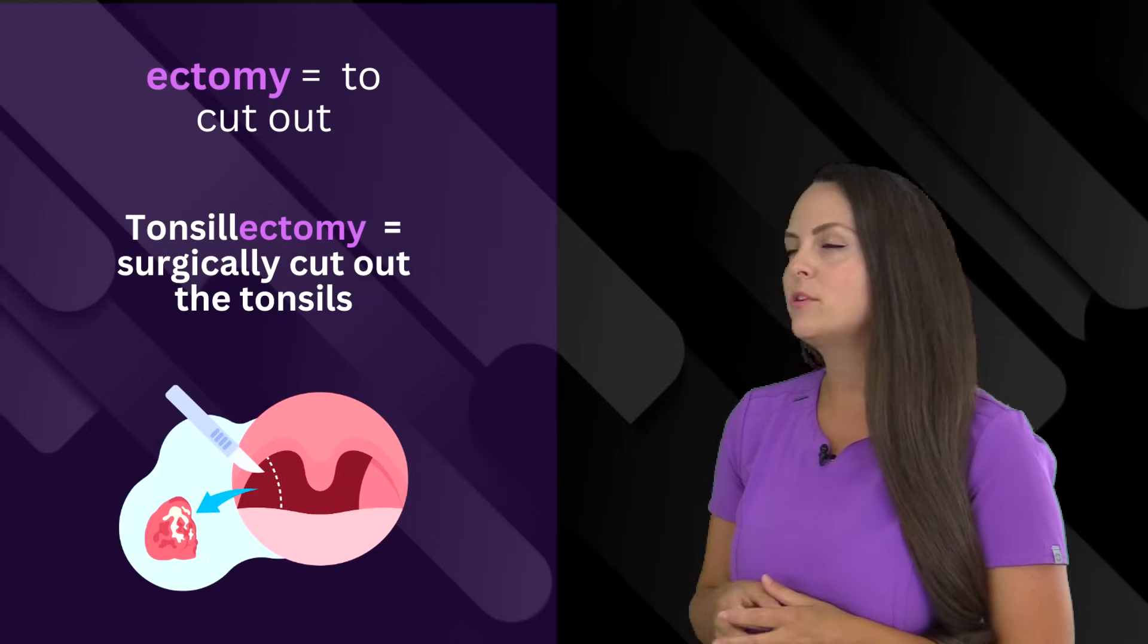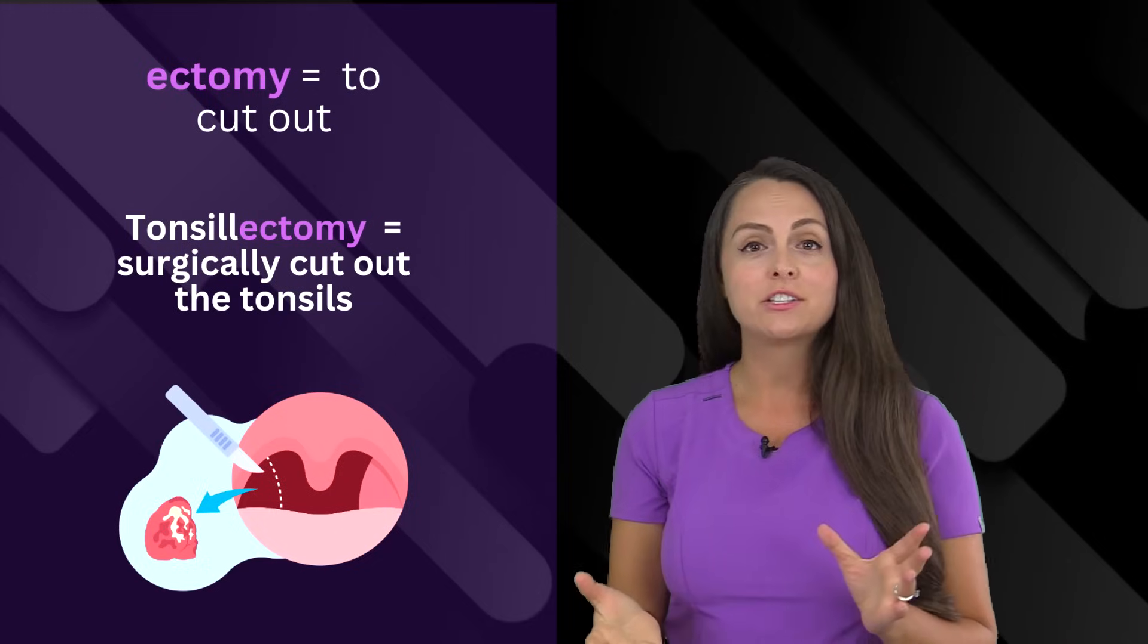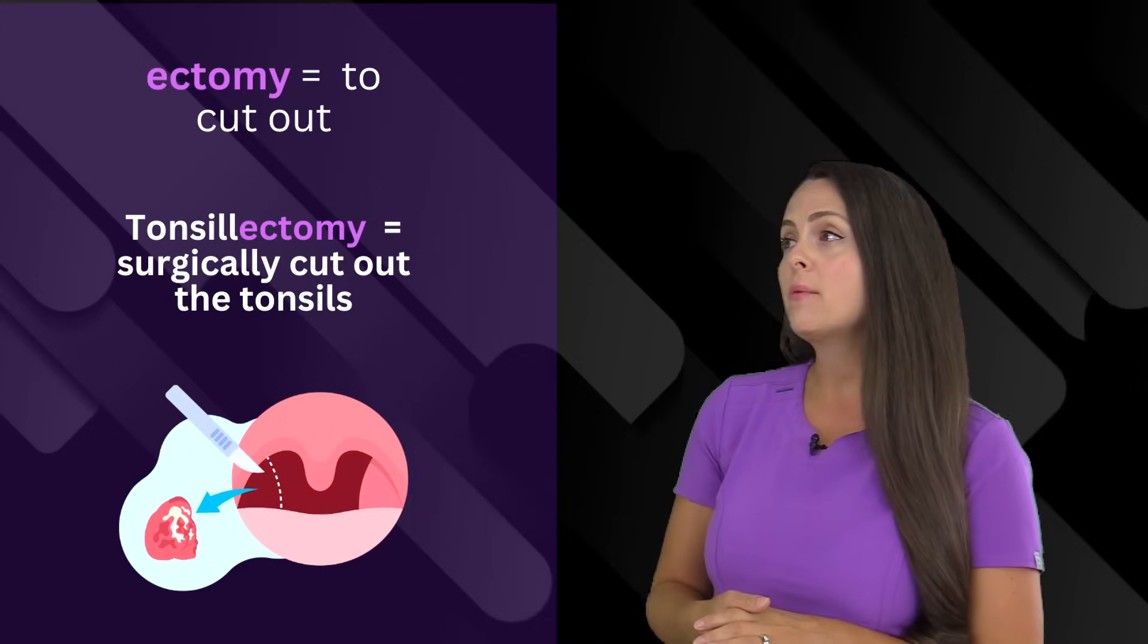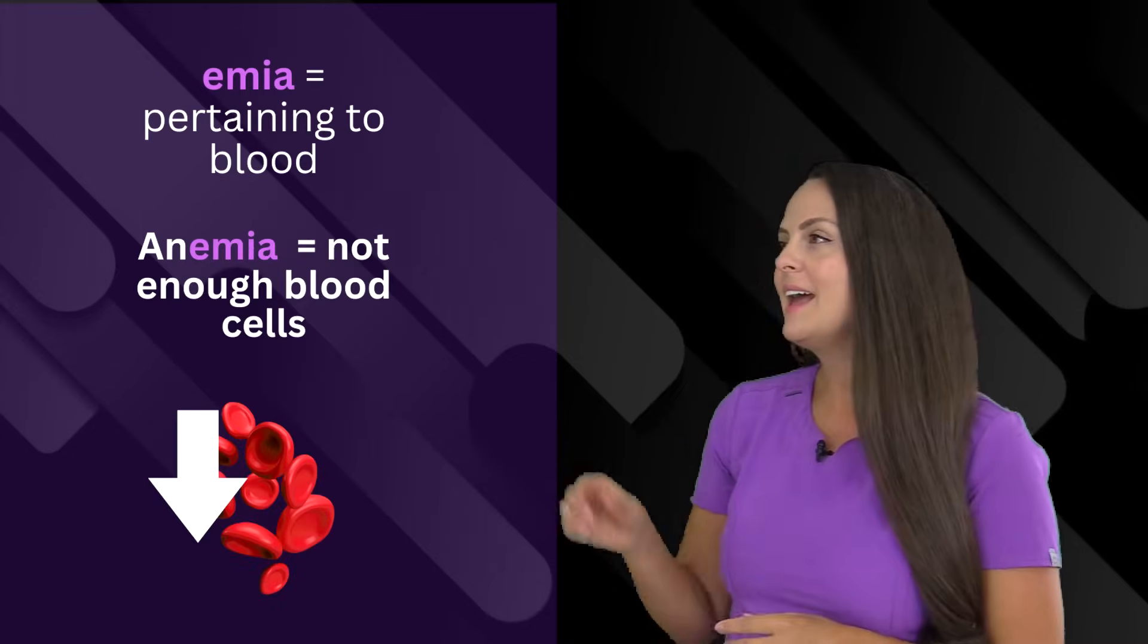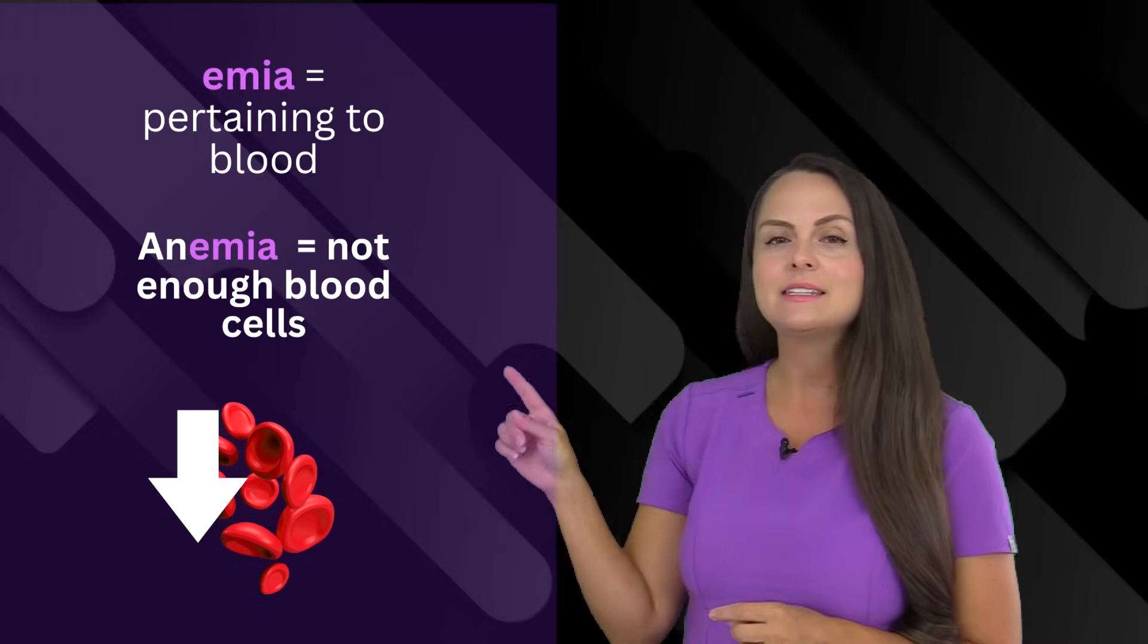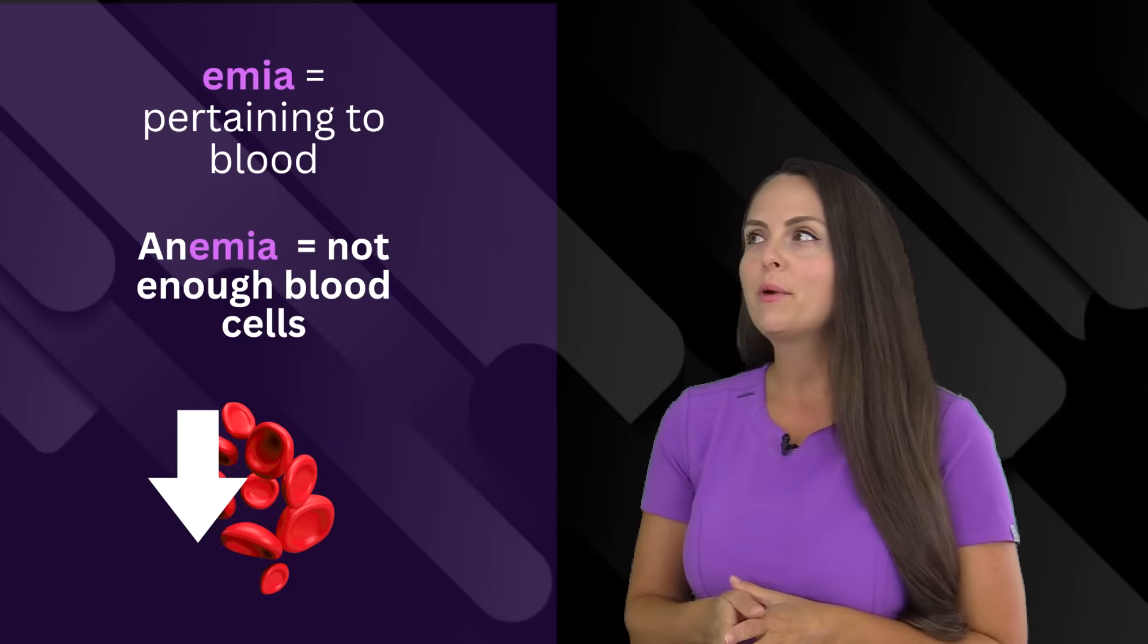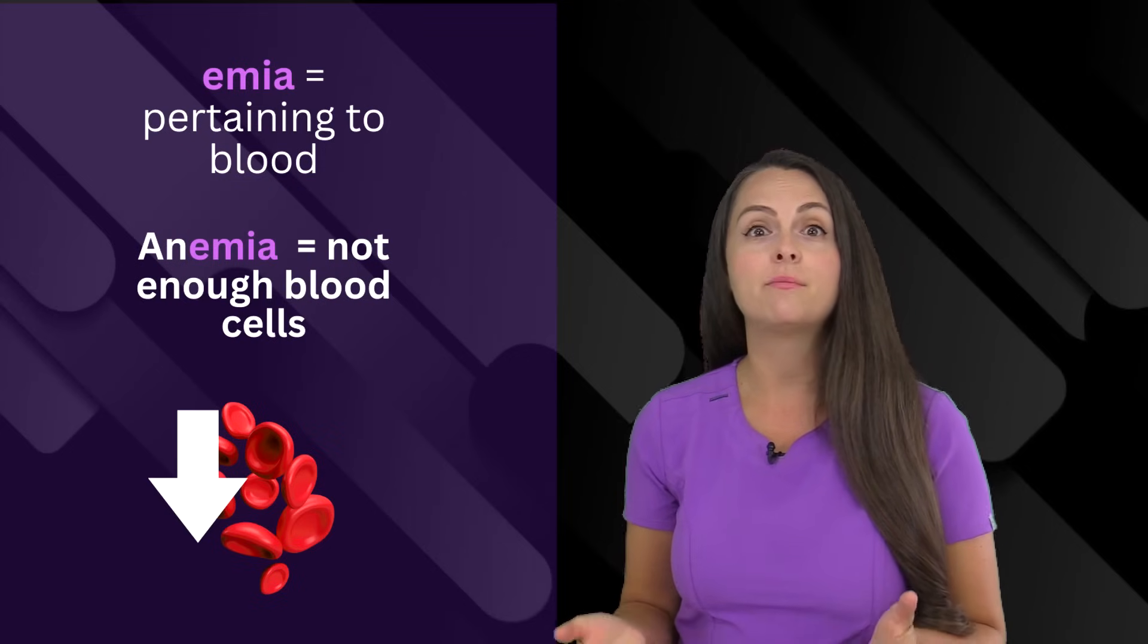Then there's ectomy, which means to cut out. If a person has chronic infections of their tonsils, they may consider getting a tonsillectomy, where we go in and cut those tonsils out so they don't have those infections anymore. And we have emia. This is a condition related to the blood. So if a person has anemia, we're talking about a condition where they don't have enough blood cells.